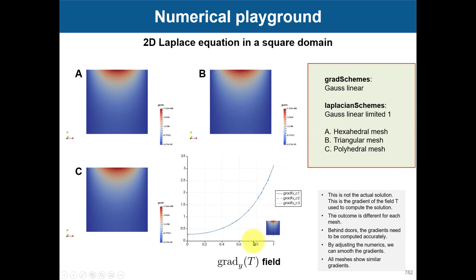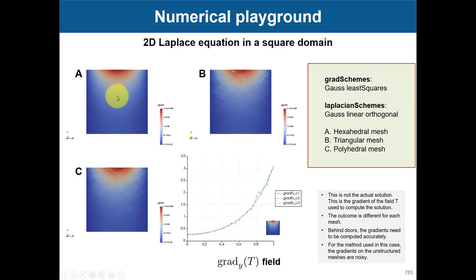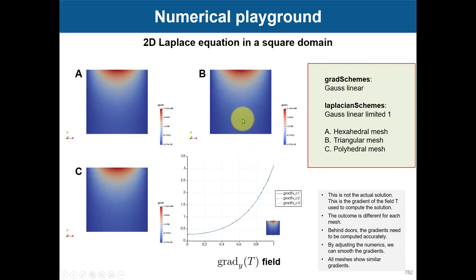When you change that method and use a Gauss linear limited one - the one that does the correction according to orthogonality - look at the gradients: they are perfect, very smooth, and compatible with the one from the orthogonal mesh. The same will happen with the least squares method. So see that using the wrong method with unstructured meshes causes noise, but when you change to the limited scheme, you get much smoother behavior. The Gauss least squares gives some minor differences compared to Gauss linear, and there's a tendency for it to give a better solution.